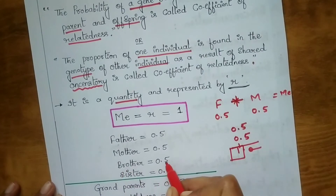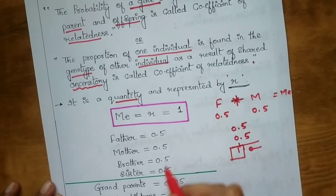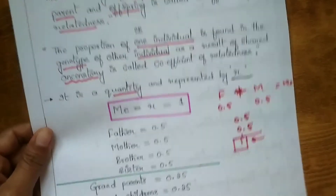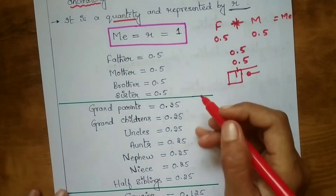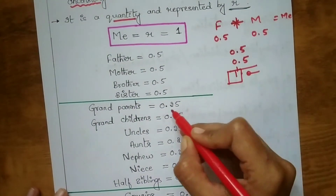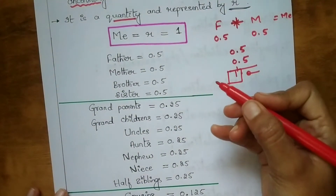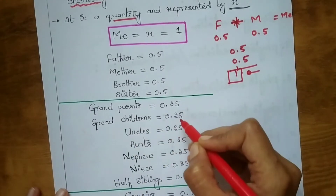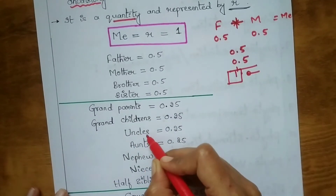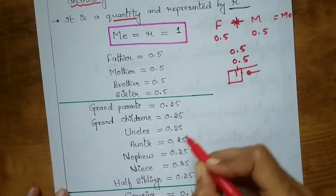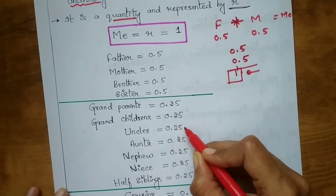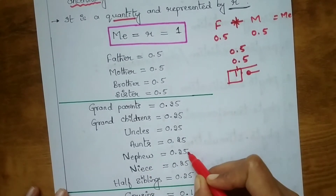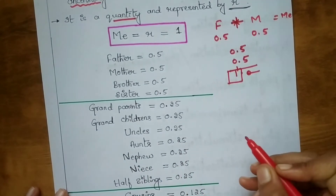Your father is 0.5, mother is 0.5, brother is 0.5, and sister is 0.5. Next, grandparents are 0.25 and grandchildren are also 0.25.